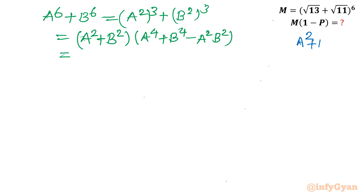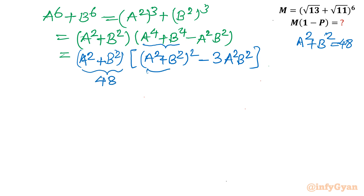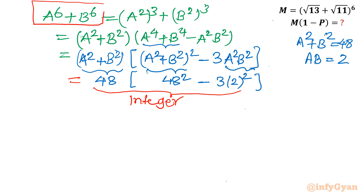For a⁴ plus b⁴, I use the identity (a² plus b²)² minus 2a²b². So the bracket becomes (a² plus b²)² minus 2a²b² minus a²b², which is (a² plus b²)² minus 3a²b². Substituting a² plus b² equals 48 and ab equals 2: we get 48² minus 3 times 4. Everything evaluates to a pure integer. Therefore a⁶ plus b⁶ is always an integer.